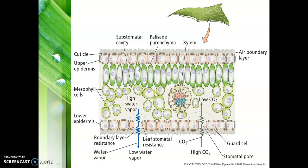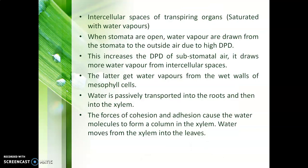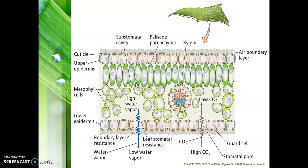This is also the anatomical structure of the leaf. This is the air boundary layer, then the cuticle, the upper epidermal layer — with very few stomata on the upper epidermis — then the palisade parenchyma, the spongy parenchyma with large intercellular spaces, the lower epidermis, and the lower boundary layer resistance with stomata and guard cells. The intercellular spaces of the spongy parenchyma are saturated with water vapors.